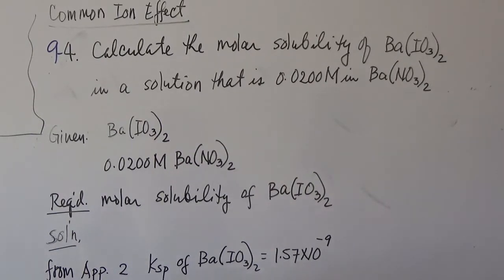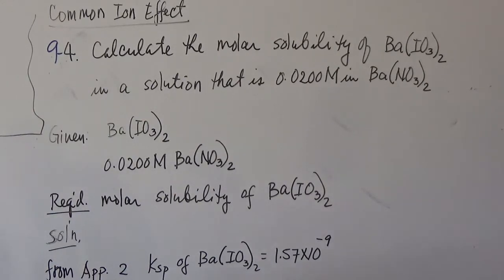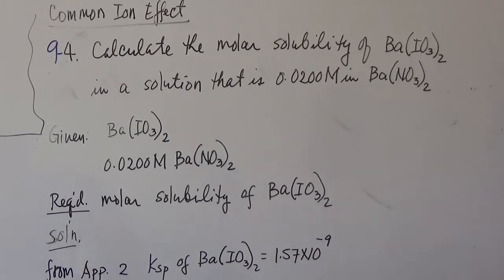Okay, problem 9.4. This is an example of a common ion effect, meaning what is the effect on solubility if there is a common ion between the solid and the solvent.